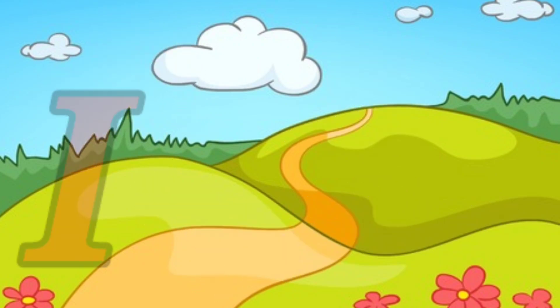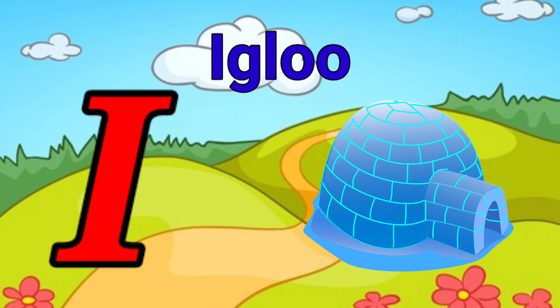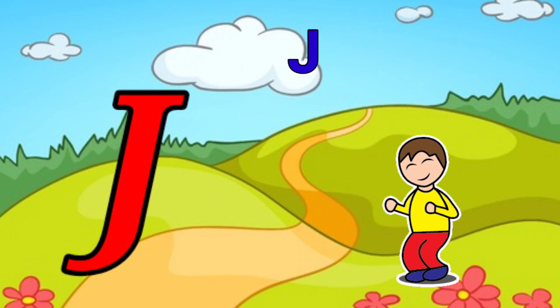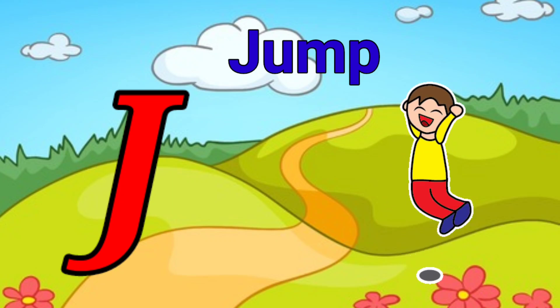I is for igloo, i-i-igloo. J is for jump, j-j-jump.